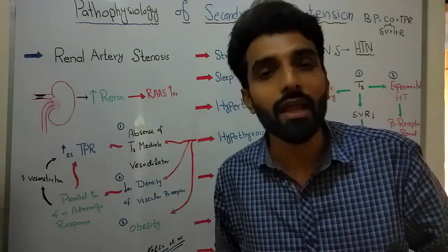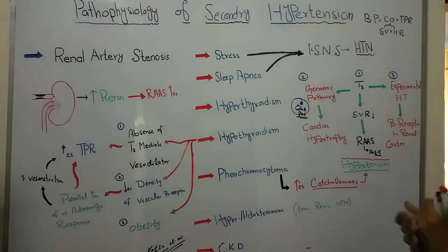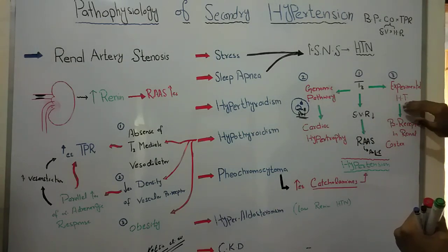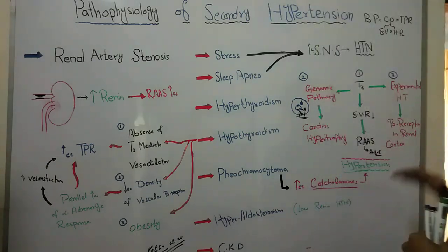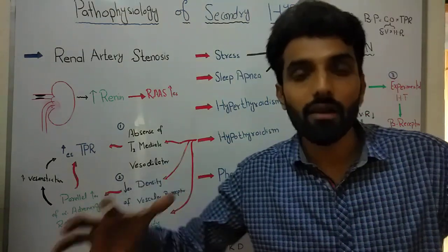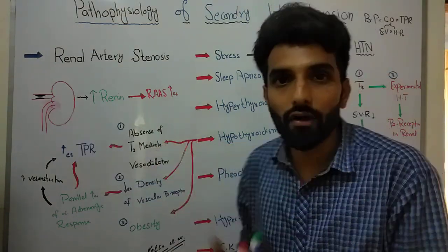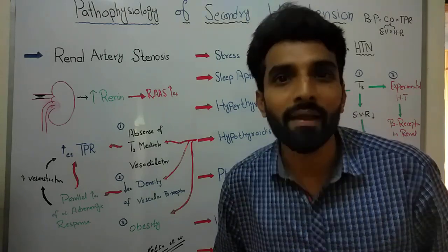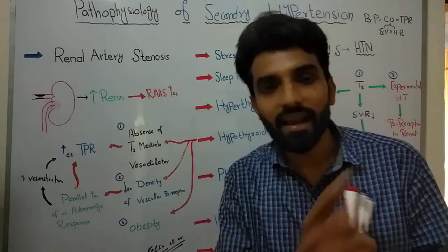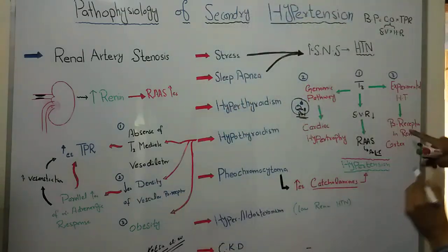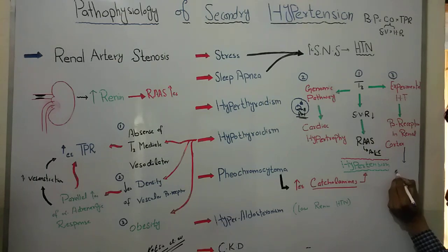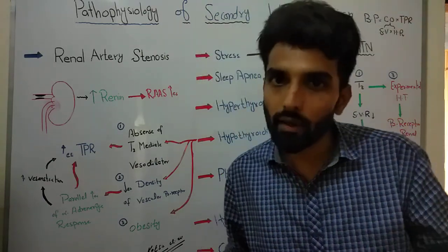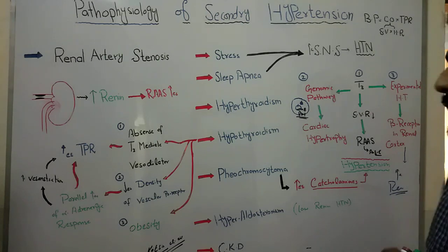To explain again: T3 acts on a cardiac cell, enters the nucleus, causes transcription of certain genes, messenger RNA is formed, comes out of the nucleus, attaches to a ribosome, and protein synthesis takes place. These proteins play an important role in the development of cardiac hypertrophy, leading to hypertension. Furthermore, in experimental animals with hyperthyroidism, the number of beta receptors in the renal cortex was increased. These beta receptors in the renal cortex increase the secretion of renin from the kidney, which activates the renin-angiotensin system, increasing angiotensin 2 and ultimately causing hypertension.